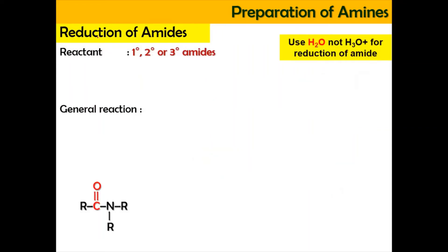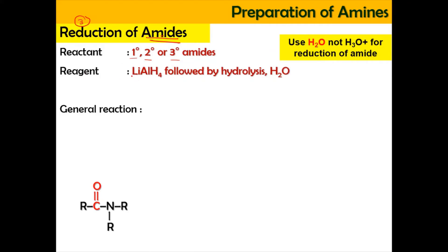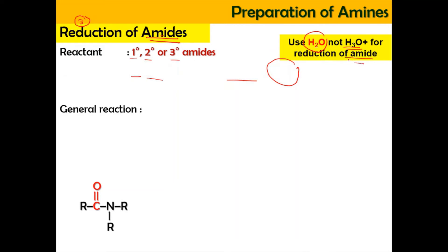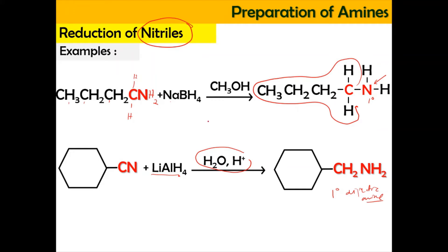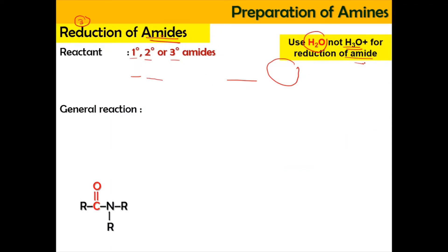Now we're going to do the reduction of amides — preparation number three. For the reactant, we need either a primary, secondary, or tertiary amide. The reagent is lithium aluminium hydride followed by hydrolysis using water. Important: for amide reduction, you use H2O (water), NOT H3O⁺. For nitrile reduction we used acidic conditions, but for amide reduction we do not use acidic conditions — only neutral water.